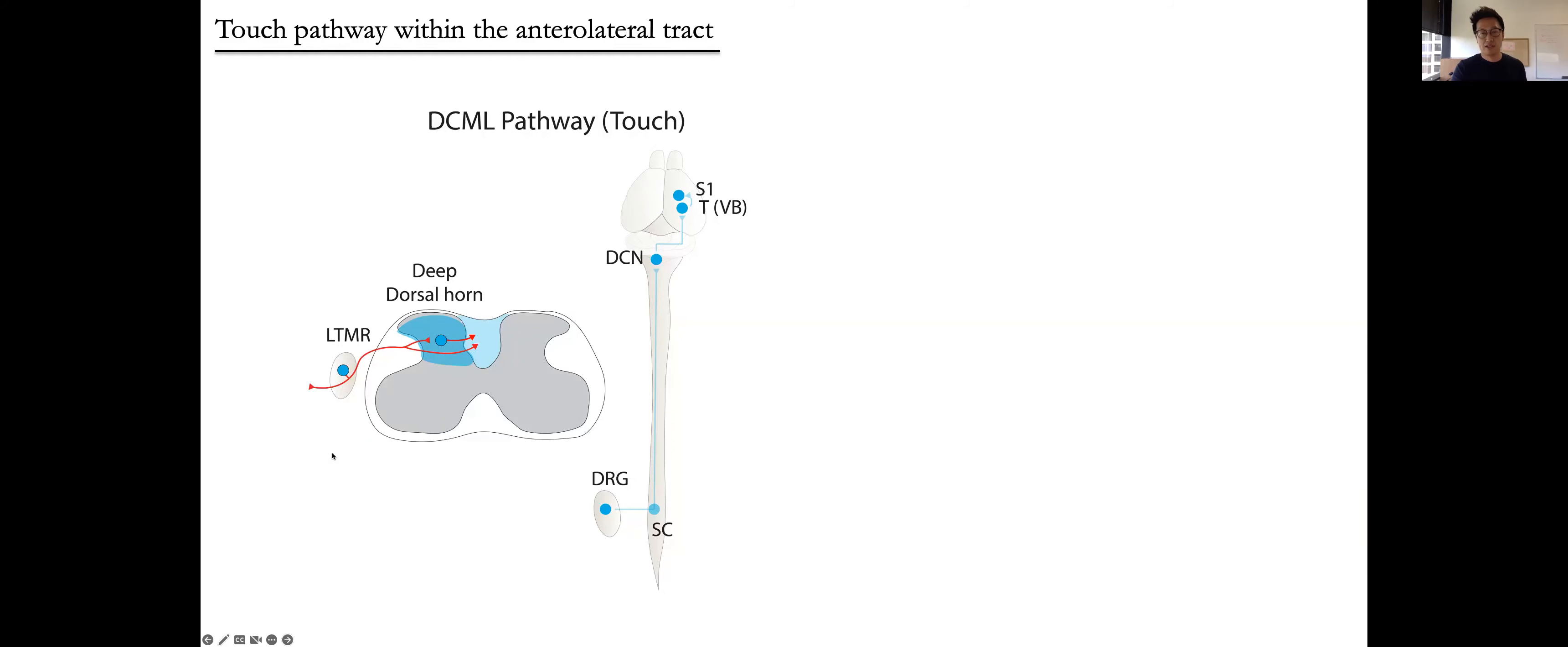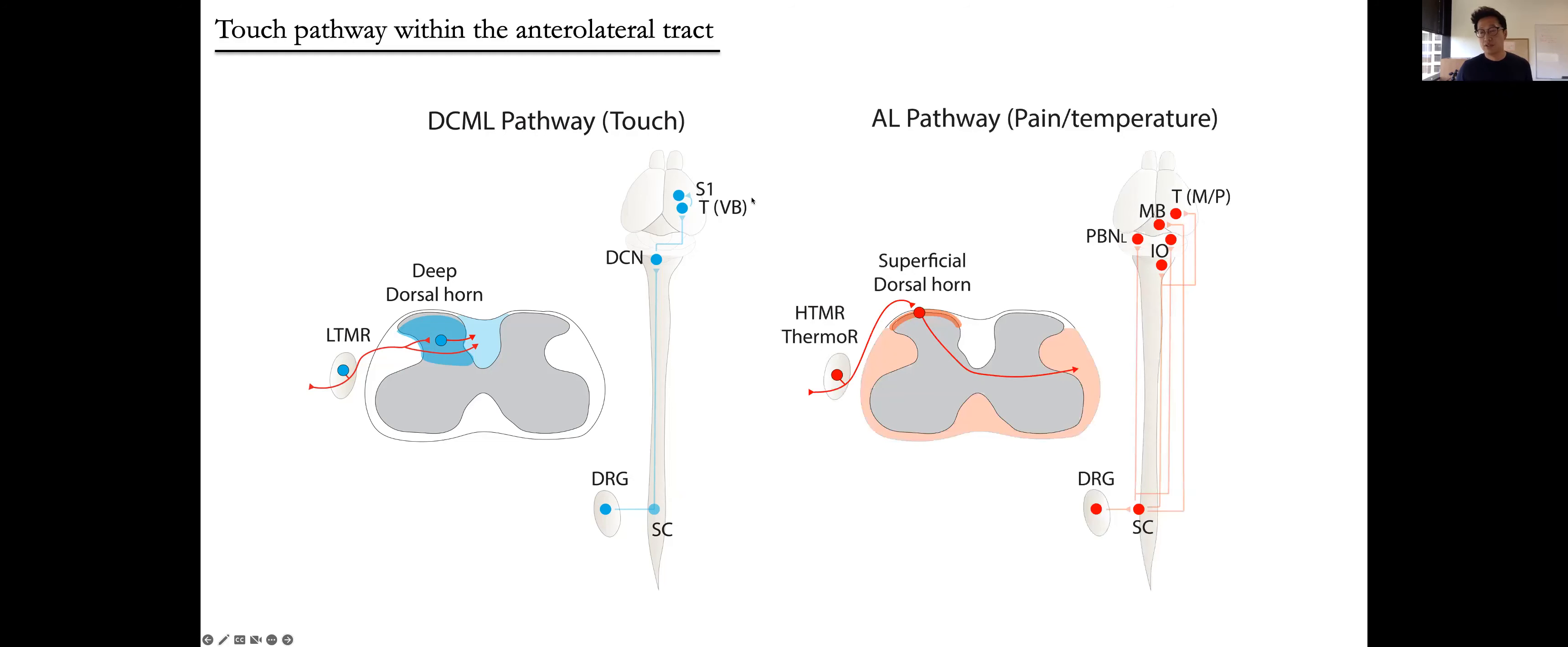These touch signals are transmitted to the deep dorsal horn and then transmitted to the brainstem directly or through the deep dorsal horn projection neurons. These tactile signals are further transmitted to the thalamus and somatosensory cortex. In contrast, the traditional view of pain and temperature transmission starts with nociceptors or thermoreceptors that detect noxious or thermal stimuli. These pain and temperature signals are transmitted to the superficial dorsal horn in the spinal cord, and then transmitted to the brain through the anterolateral pathway, which is known to be the pain pathway.